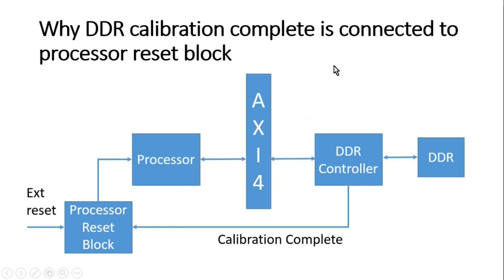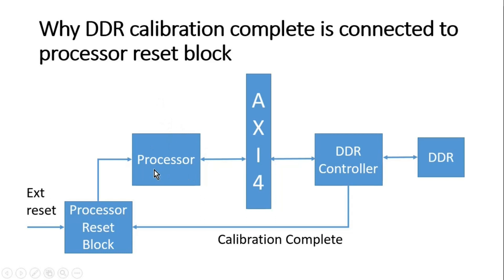If there are many other IPs in your system that are dependent on the processor, they will all be in a non-functional state. So this is the disadvantage — but it is still very important to connect this calibration complete signal to the processor reset block. Now let me tell you why. When we power up our system, the power-up time of our processor is very quick compared to DDR memory, because DDR memory needs a calibration process which is more time-consuming than the processor power-up time.